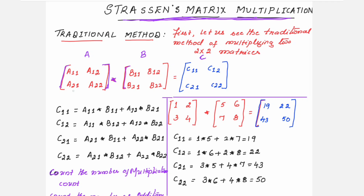A11, A12, A21 and A22; B11, B12, B21 and B22 represent the elements of the two input matrices, and C11, C12, C21, C22 represent elements of the resultant matrix.